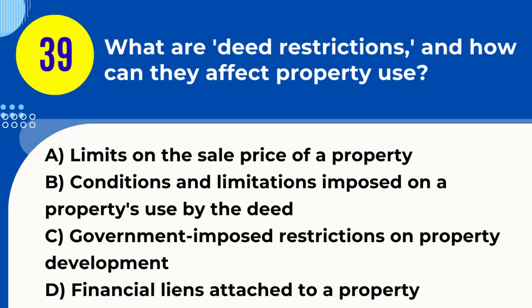Question 39. What are deed restrictions, and how can they affect property use? A. Limits on the sale price of a property. B. Conditions and limitations imposed on a property's use by the deed. C. Government-imposed restrictions on property development. D. Financial liens attached to a property. Answer: B. Explanation. Deed restrictions are conditions and limitations written into a property's deed that dictate how the property can be used, what can be built on it, and how it can be altered. These restrictions can significantly affect property use and are legally enforceable.